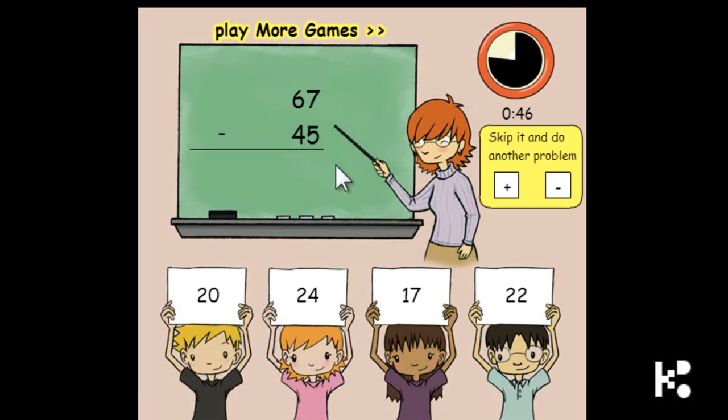And 67 minus 45 is 7 to 22. Anyway, okay.